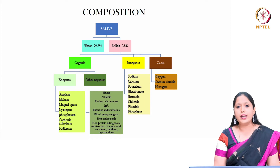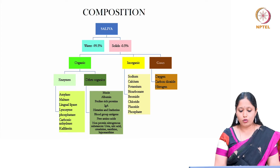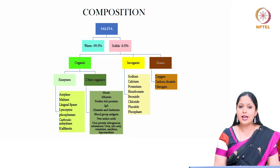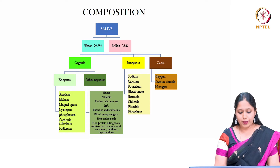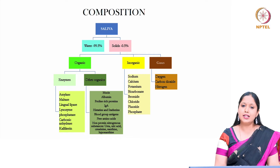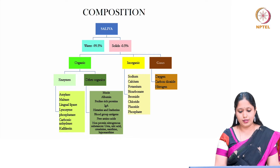Other organic components include mucin, albumin, proline-rich proteins, immunoglobulin A, histatins, statherins, blood group antigens, free amino acids, and non-protein nitrogenous substances like urea, uric acid, creatinine, xanthine, and hypoxanthine.